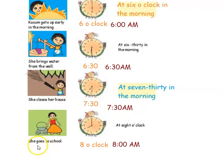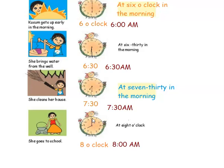Next, she goes to school. The given time is 8 o'clock. So how will you represent 8 o'clock? The minute hand will be at 12 and the hour hand will be at 8. The hour hand points the time, so it will be at 8 since it is exactly 8 o'clock. The hour hand will be at 8 and the minute hand will be at 12. So it represents 8 a.m. because it is in the morning.